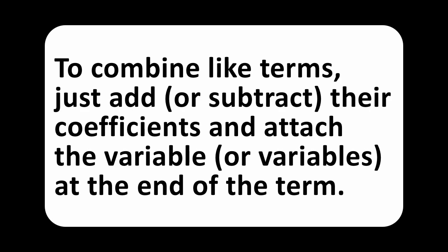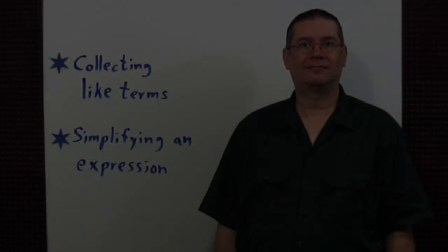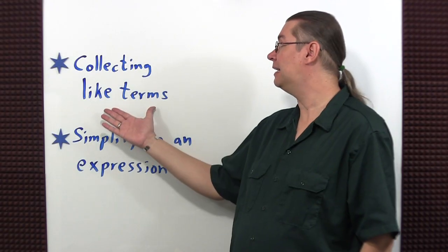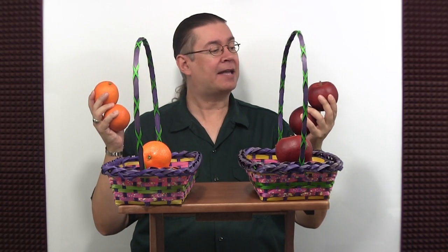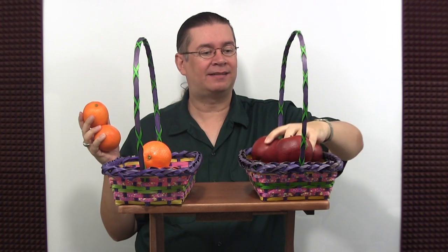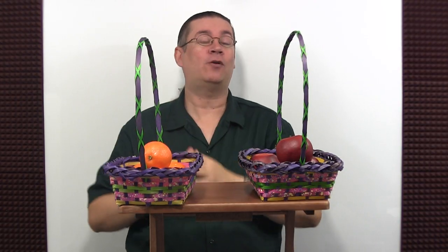To combine like terms, just add or subtract their coefficients and attach the variable or variables at the end of the term. This is also called collecting like terms or simplifying an expression. One way to visualize this concept is with apples and oranges. I can combine these apples in the apple basket because they are the same type of fruit — they can be considered like terms. Likewise, I can add these oranges to this basket because they also contain oranges — they're also like terms. I don't have a basket for pears, so there are no like terms for the pear. Let's see how this looks in algebra.